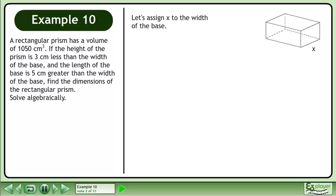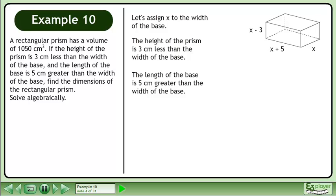Let's assign x to the width of the base. The height of the prism is 3 cm less than the width of the base. The length of the base is 5 cm greater than the width of the base. The volume of the box is 1050 cm³.